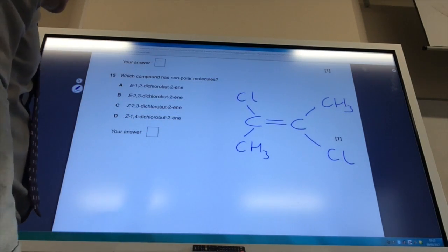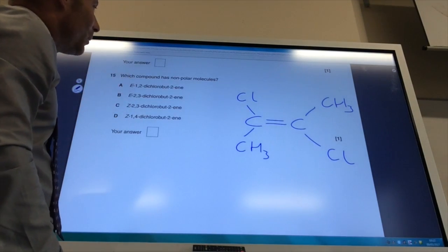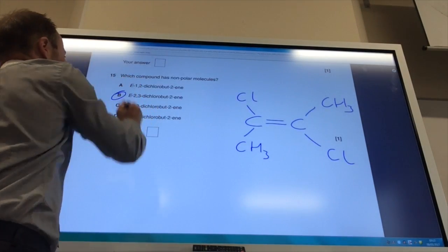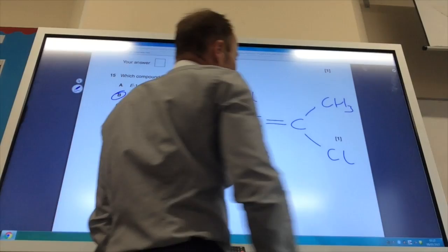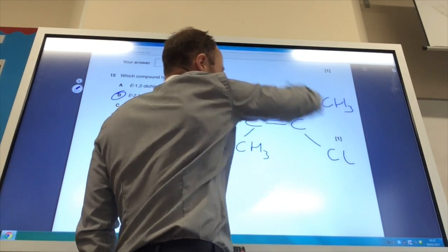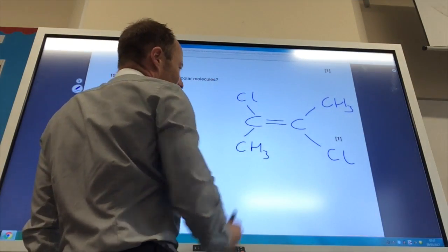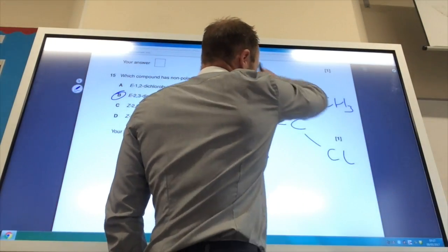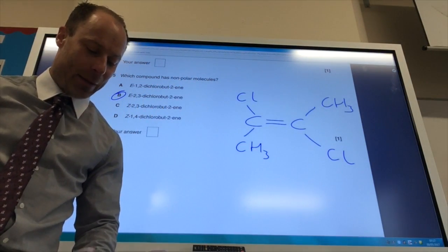This is an interesting one. If you draw these molecules out, you're looking for a non-polar molecule. I've drawn out B because that's what the answer is, which is two, three dichloro butane. Hopefully you can see that the chlorines are opposite each other, and therefore, although they're electronegative, they're canceling each other out. Because they're opposite, overall the molecule would be non-polar. So the answer is B.